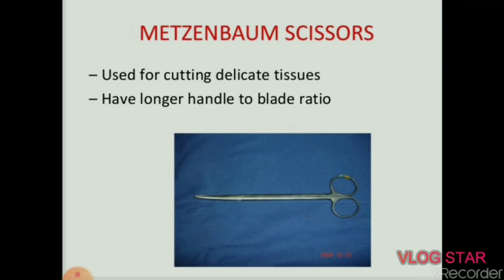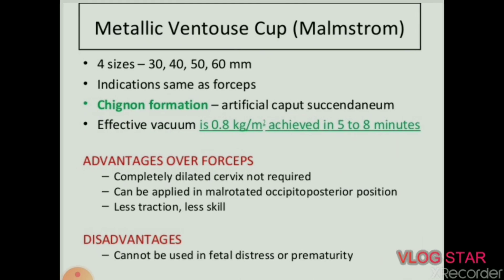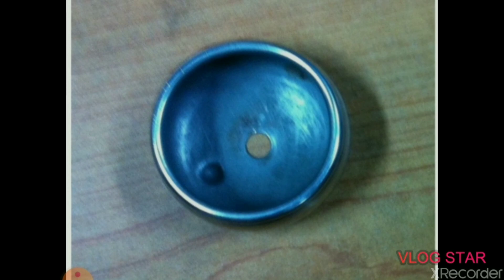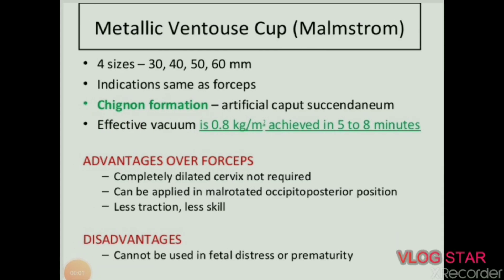Next instrument: Mayo scissors, used for cutting delicate tissues; has a longer handle to blade ratio. Next instrument: metallic Ventouse cup — Malmstrom cup. Available in four sizes: 30, 40, 50, 60 mm. Indications same as forceps. It produces a chignon (artificial caput succedaneum). Advantages over forceps: completely dilated cervix not required, can be applied in malrotated occipito-posterior position, less traction and less skill required. Disadvantage: cannot be used in fetal distress or prematurity.